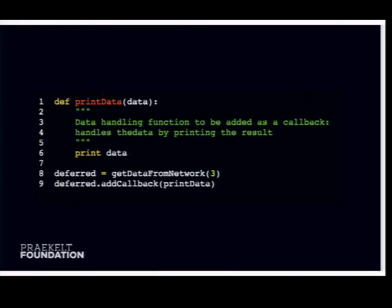Deferreds also allow for errbacks — if something goes wrong or an exception is raised, the errback is called. It works really well, but when you add a lot of callbacks the code can start to get fairly complicated and hard to follow. Even though Python doesn't have as elaborate anonymous function statements, there is a better way to write simple non-blocking tasks in Twisted.